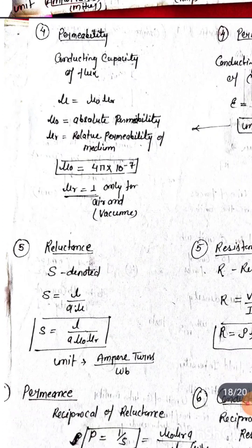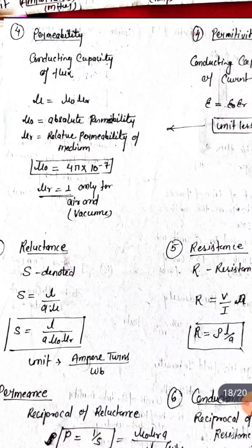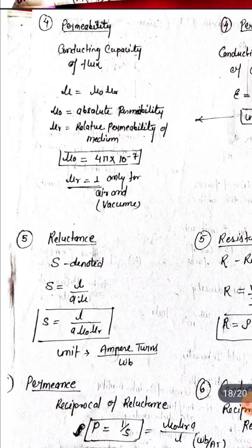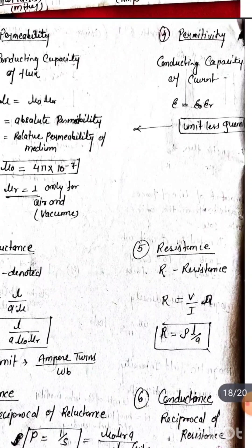S equals L upon A times mu. If we are using resistivity in magnetic circuit, we use the term reluctance. In electric circuit this is resistance, R equals V upon I, measured in ohms.